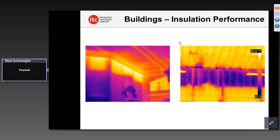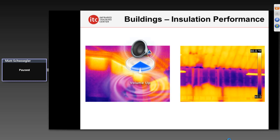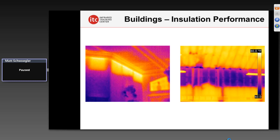Not to be forgotten — building systems. Many of you out there are doing building energy work, checking for missing insulation, air leakage-related issues, or moisture intrusion. Infrared has been utilized since the 70s to very successfully detect areas of missing insulation in a building. Of course, you need the right conditions — a good temperature difference. But summer or winter, spring or fall, if you have the right conditions, we can find these problems in both warm and cold weather.